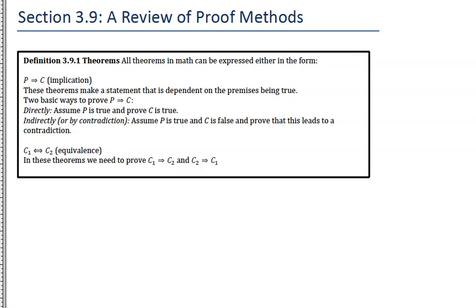We're going to look at a few methods where we can prove a certain statement or theorem. All theorems in math can be expressed in either of two forms. The first form is an implication — if P then C — where if you have a set of premises, the conclusion follows. The other form is the equivalence: C1 if and only if C2.